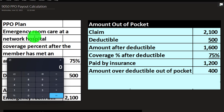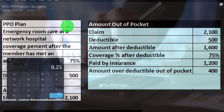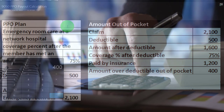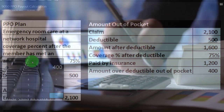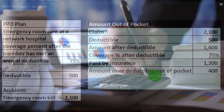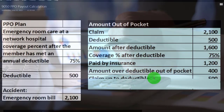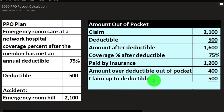We can also calculate it another way: 100% minus 75% = 25%, times the $1,600 over the deductible gets us to that same $400. Then we add the deductible of $500, so we pay $900 out of pocket total.